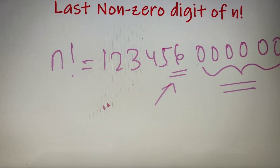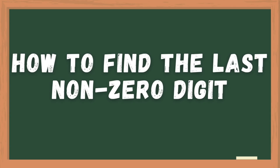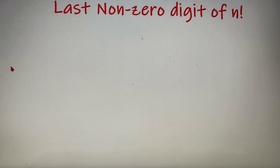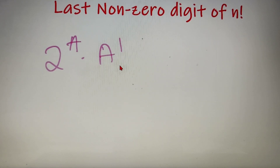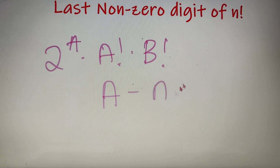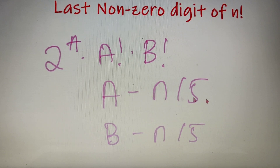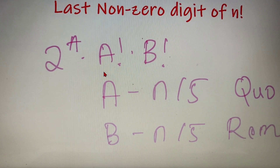So let's check how to find the last non-zero digit of any n factorial. To find it, we just have to remember a simple formula: 2 to the power a, into a factorial, into b factorial. Here, a is the quotient when n is divided by 5, and b is the remainder when n is divided by 5.